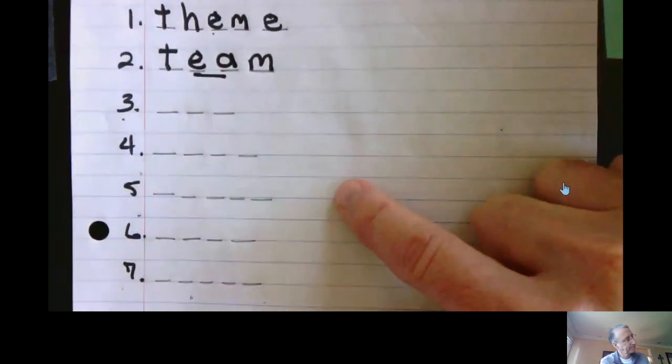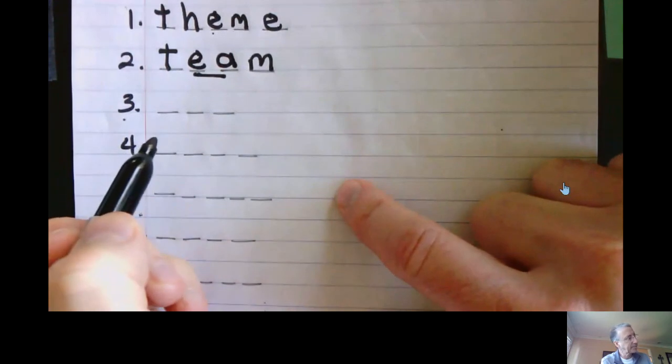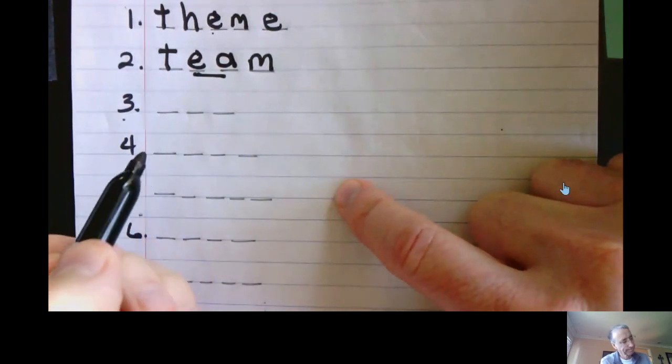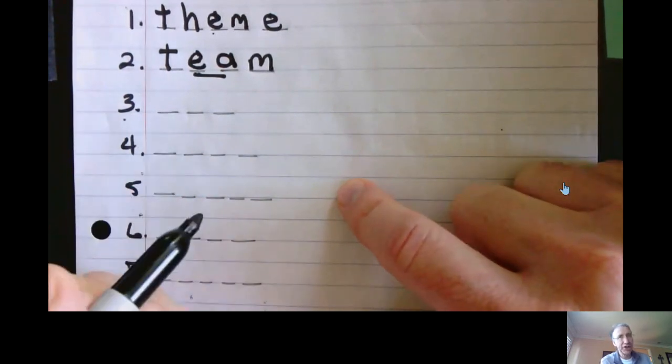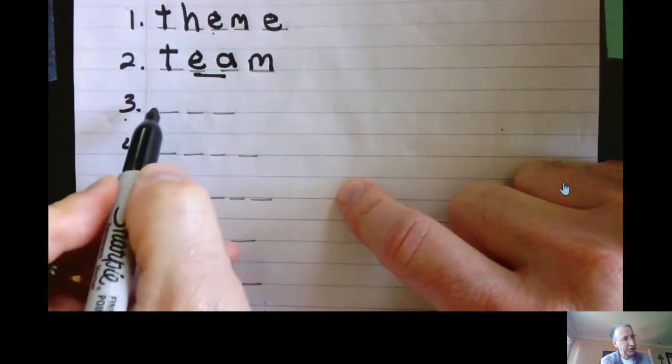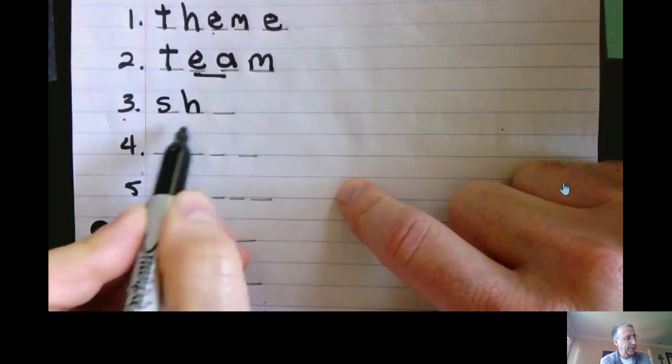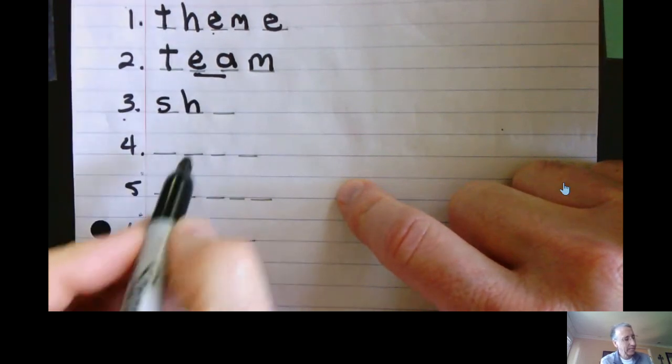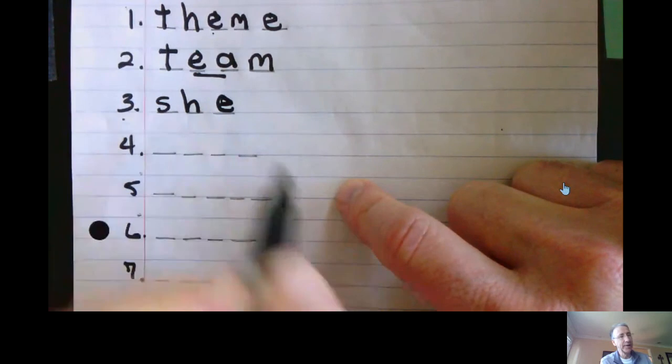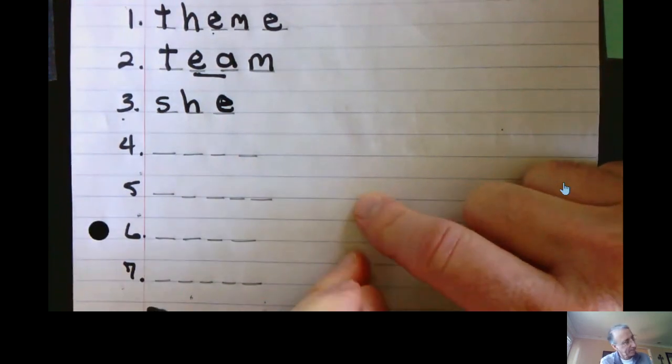Number three. She. As in, she is my mom. She. How would you write that? S-H-E. Easy peasy, right? She is my mom.